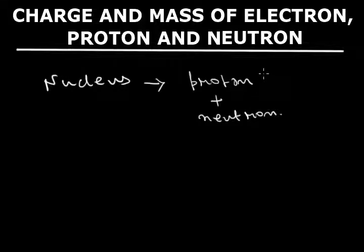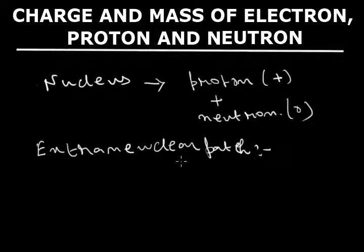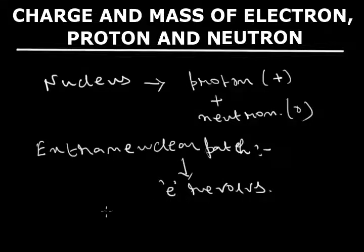Proton contains positive charge and neutron contains no charge. In the extranuclear path, that is around the nucleus, electrons revolve. Now let us discuss the charge and mass of electron, proton, and neutron.